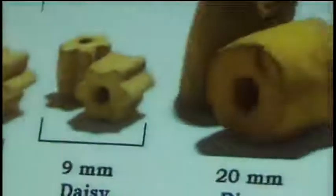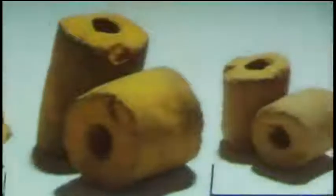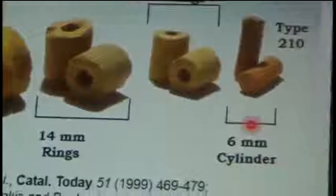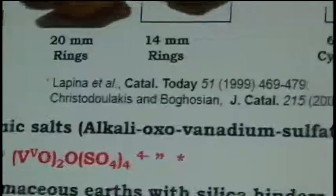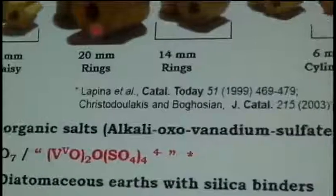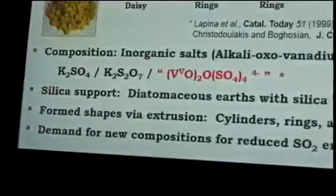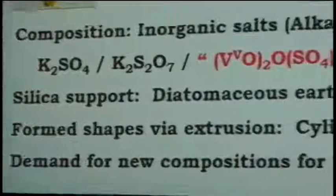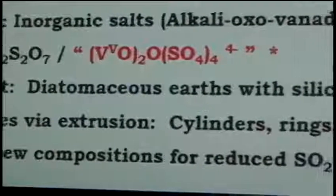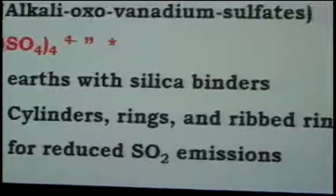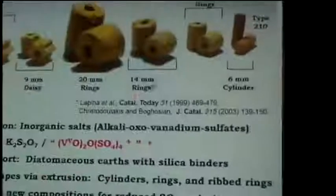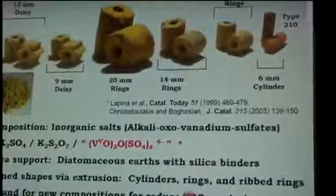Another interesting example is a commercial sulfuric acid catalyst. This shows the different shapes that are available, ranging from the smaller type — so-called type 210 — which are basically solid cylinders, up to 10 millimeter rings, up to what I call boulders, these 20 millimeter rings, and then we also have the daisy shapes. What's happened in this technology over the years is that the shape has evolved, and it's evolved for several reasons.